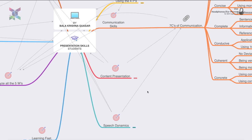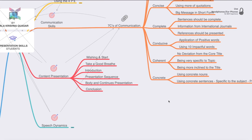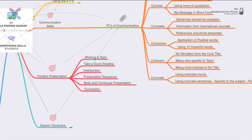For content presentation, even before starting, you should have a strong verbal handshake — that is wishing and starting. Take a good breath before beginning; most people go straight to the lectern and start speaking, which is wrong. Then go with the interaction of your planned presentation, followed by the presentation sequence — what comes first, last, and in the middle — and how you connect each step to the next.